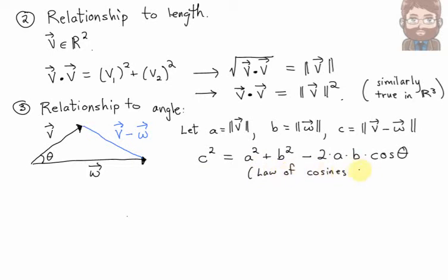And in the case where theta is a right angle, well, in that case, cosine of theta would be zero, and you'd be left with the Pythagorean theorem. So this is a generalization of the Pythagorean theorem, if you will.